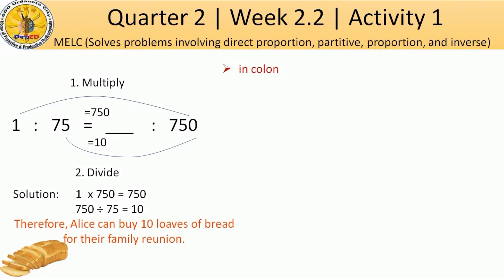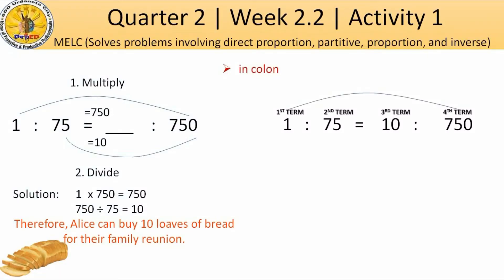Now, for us to check the answer, always remember that the product of the first and fourth terms, or what we call extremes, should be equal to the product of the second and third terms, or what we call means.